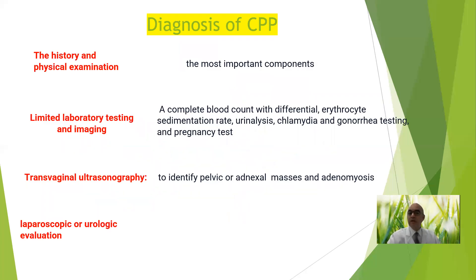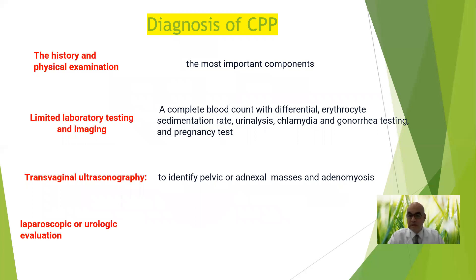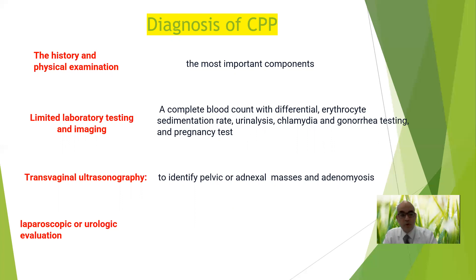For diagnosis: take history, perform examination, analyze pain with a pain score. Order limited laboratory testing — not too many investigations. Basic tests for all cases: CBC with differential, ESR, urine analysis, chlamydia, gonorrhea, and pregnancy test. Transvaginal sonography is highly indicated to identify pelvic or adnexal masses or adenomyosis; don't forget transabdominal sonography as well. Sometimes urology or proctology consultation is needed.